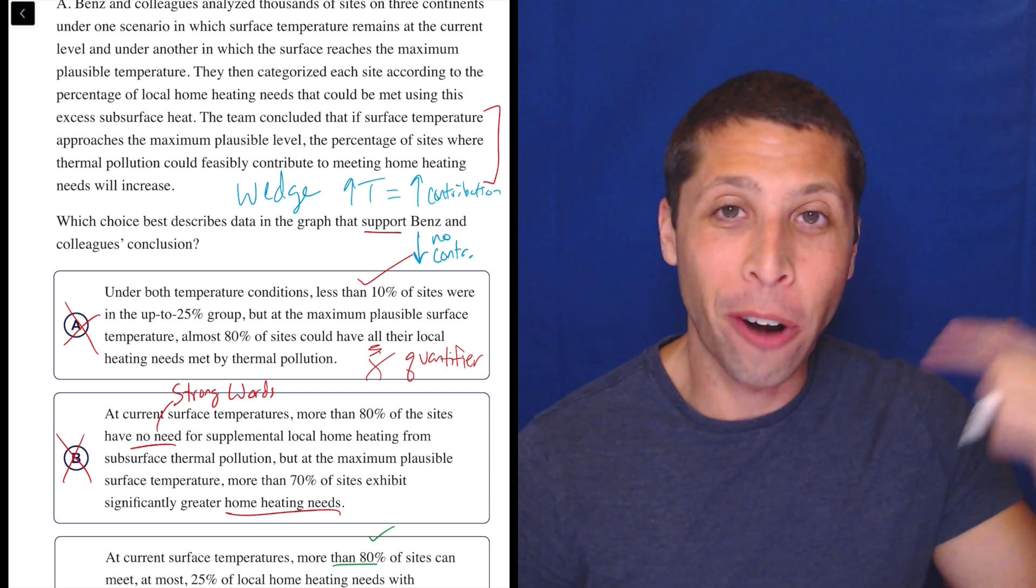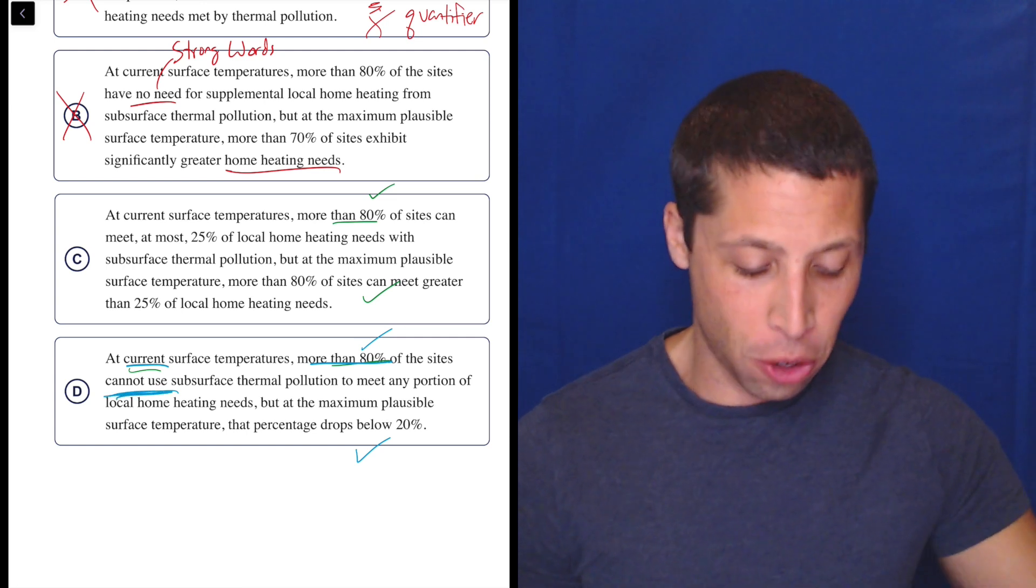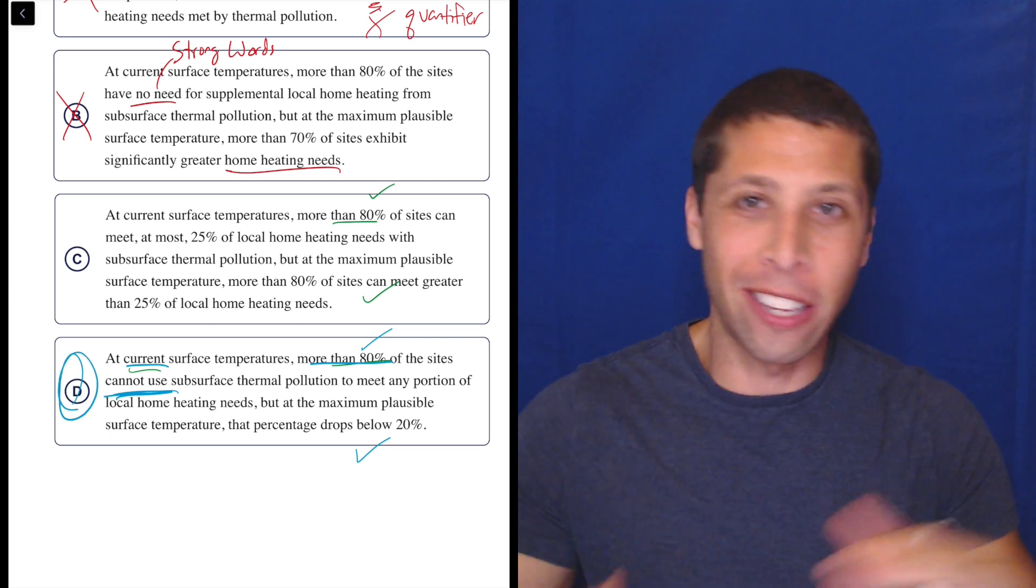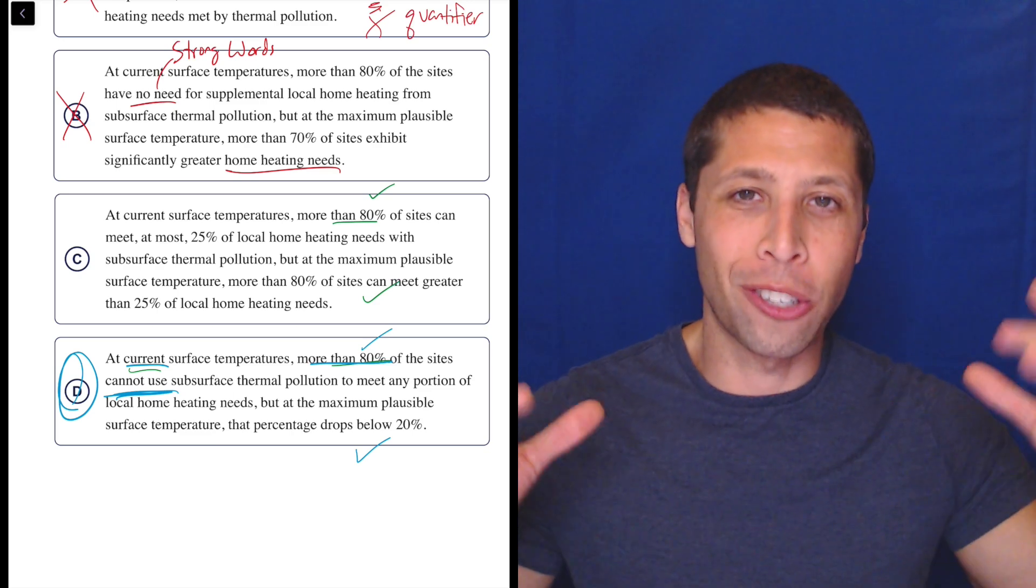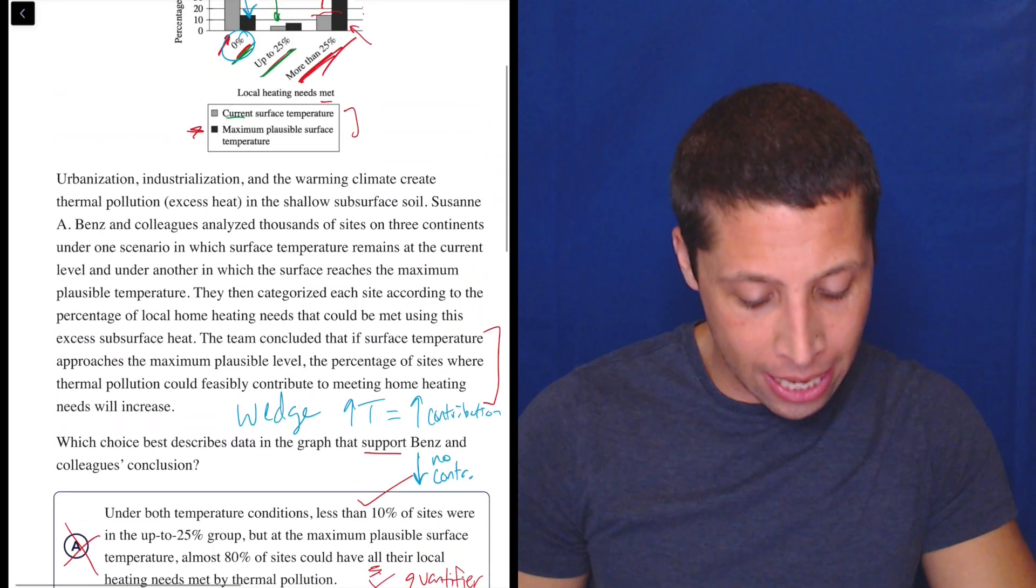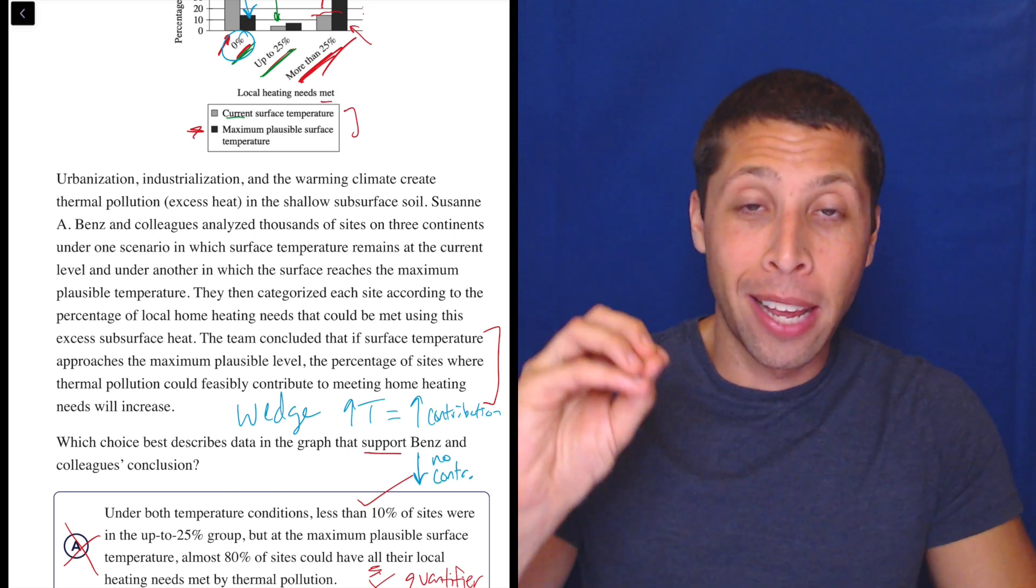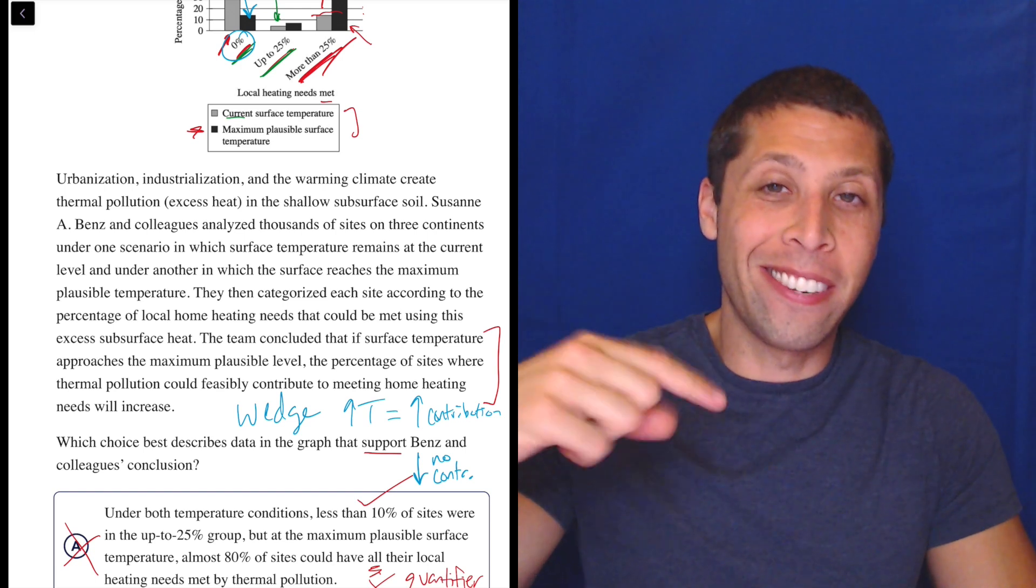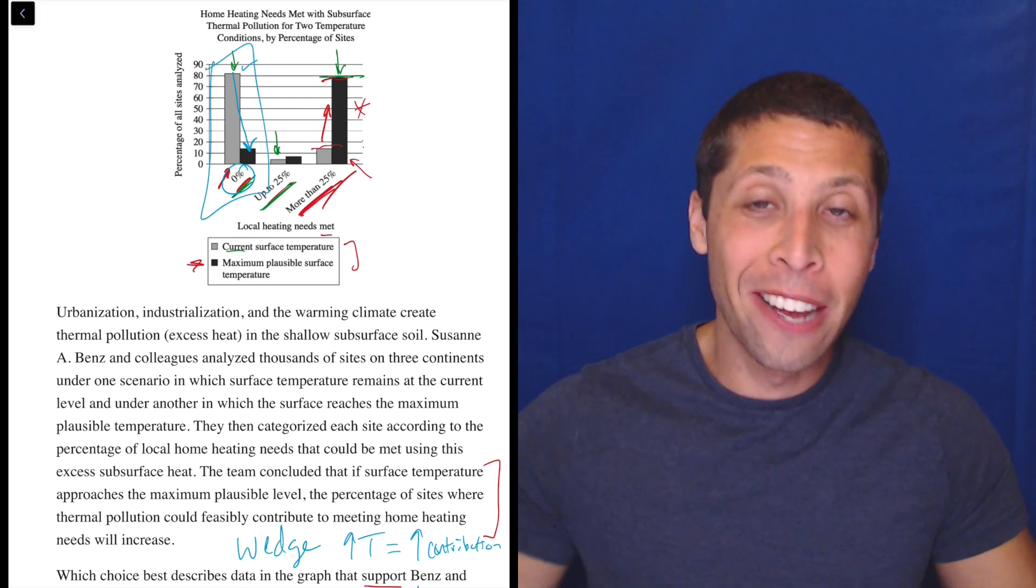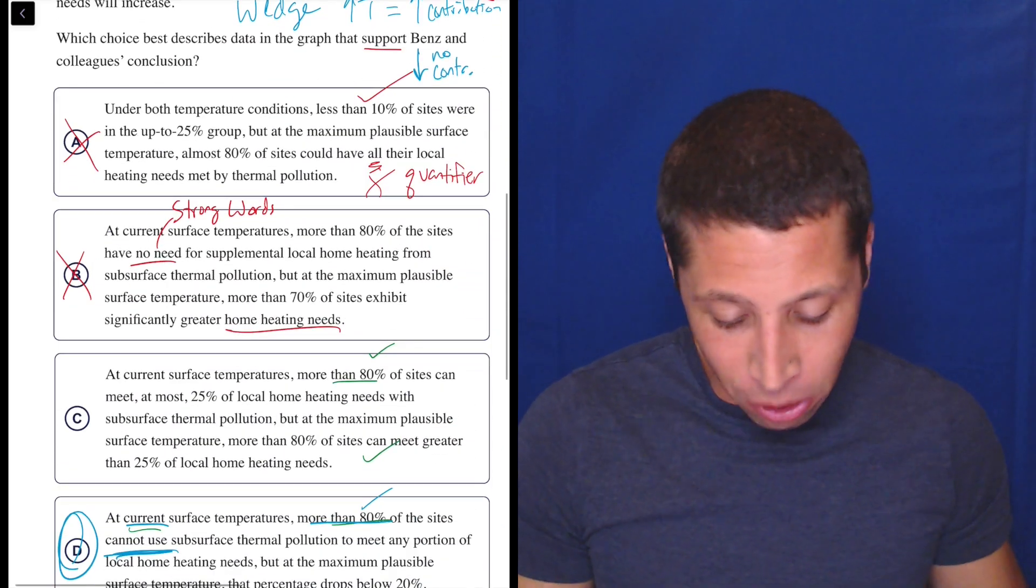And that's what D is talking about is that there are fewer sites where you will have no, cannot use subsurface thermal pollution. So that's why this question is insane. Everyone gets it wrong because not only is it hard to find the, like even know what the answer choices are talking about, but the answer choice is talking about it in the opposite way that the passage is talking about it. It's the same trend, right? They are saying here that you increase the temperature, more places are going to be able to use this particular source of heating, right? But that means fewer won't not be able to do that, right? So that means you'll have basically, yes, this whole column is what we're looking at. Fewer will be unable is what I want to say. Fewer will be unable to use this type of heat. So why is C wrong? Well, it's because current surface temperatures, they can use at most 25%.